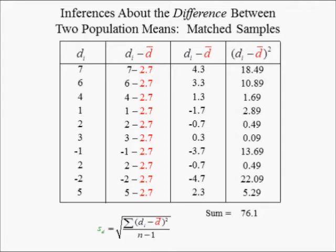Dividing this by the sample size minus 1 yields the variance of the differences in delivery times, which is 8.5 hours squared. Taking the square root of this value yields the standard deviation of the differences in delivery times, which is 2.9 hours.